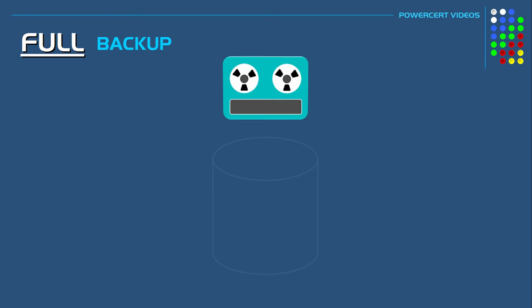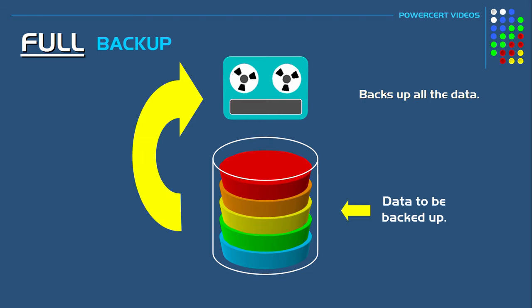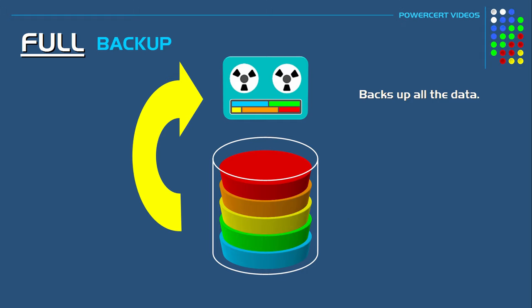So let's talk about a full backup first. A full backup is just like its name says — it backs up all the data. So in our example, all the data is simply backed up into one tape. As you might have guessed, this is the simplest form of backup to perform because only one tape is used. However, if your organization has a large amount of data, then performing a full backup daily would not be efficient, because the disadvantage of doing a full backup is that it takes the longest to perform.